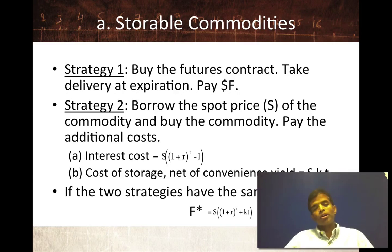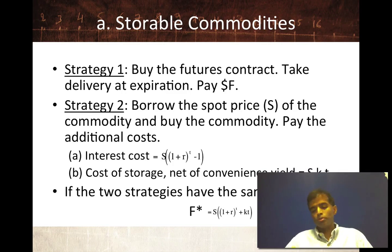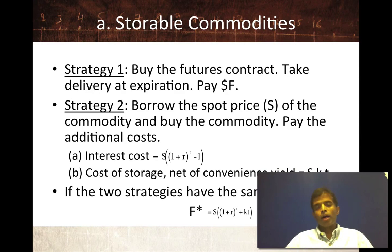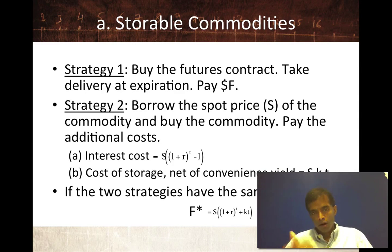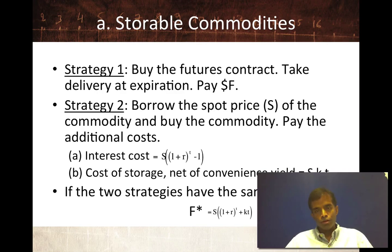Let's use a storable commodity futures example to illustrate how this works. A storable commodity is one you can put into storage — you have to pay a storage cost — it could be gold, it could be oil. First strategy: you buy the futures contract. You go buy the three-month, five-month, or six-month futures contract, and take delivery at expiration. There's nothing you need to do now or over the life of the contract. At expiration, you take delivery of the commodity and pay your agreed-upon futures price — let's call it F.